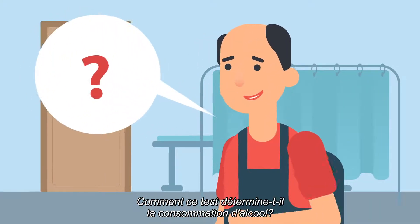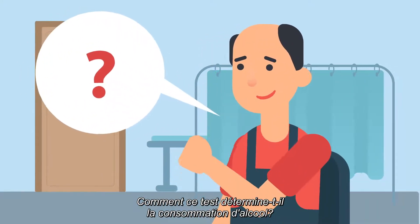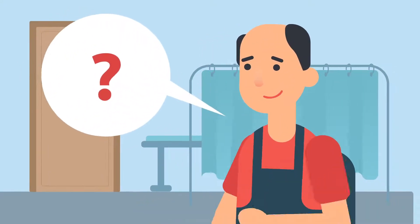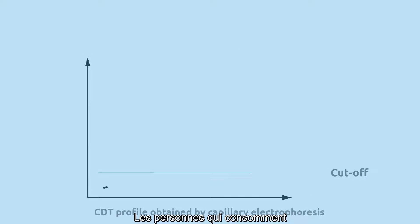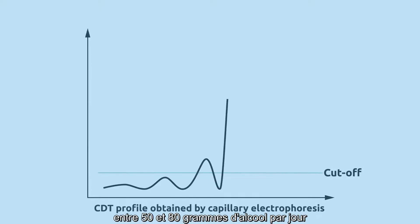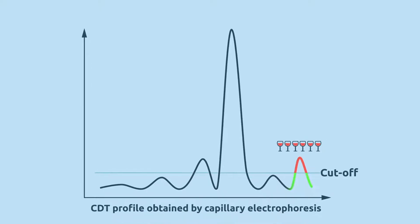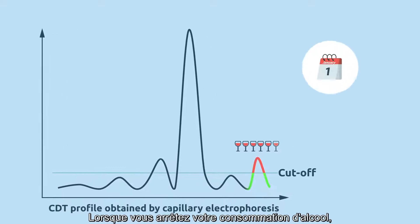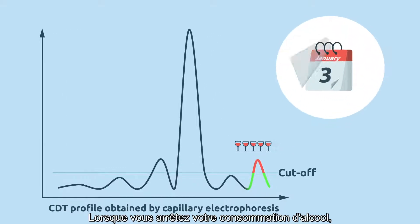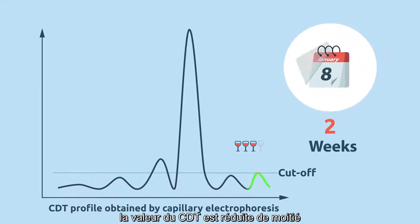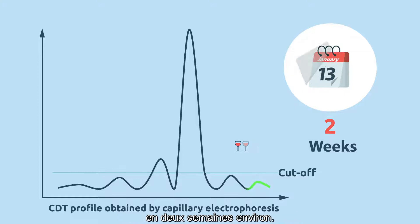How does this test determine alcohol consumption? People who take between 50 and 80 grams of alcohol per day have higher CDT levels. When you stop your alcohol consumption, the CDT value will decrease by half in about 2 weeks.